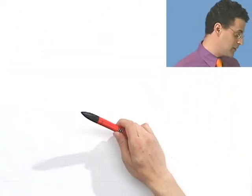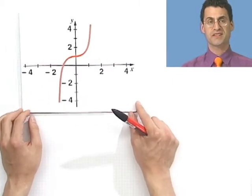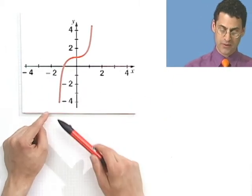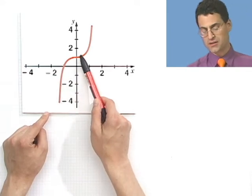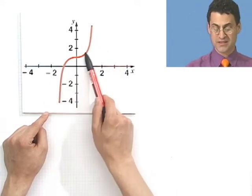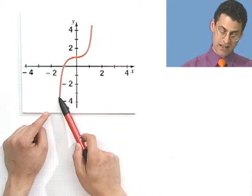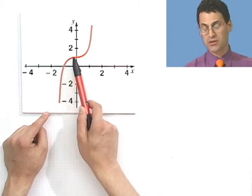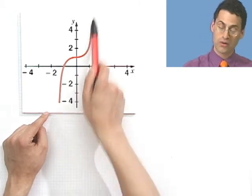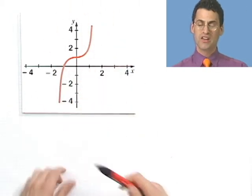Here's a function that's sort of like a cubic — probably has an x cubed in it. Even though it slows down a little bit and then goes up, it's always increasing. Climbing, climbing, climbing — slow climb, but still climbing — slow climbing, and then really fast climbing. This is increasing everywhere.